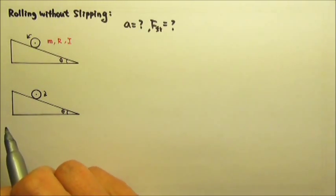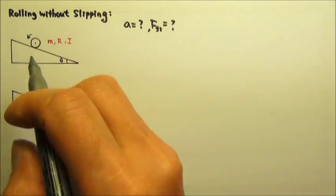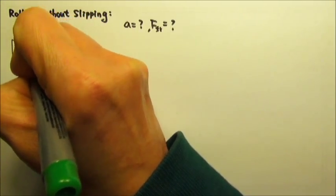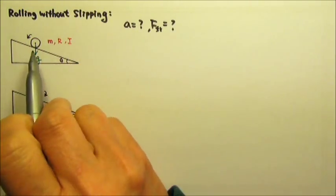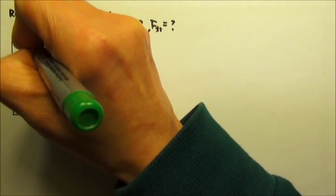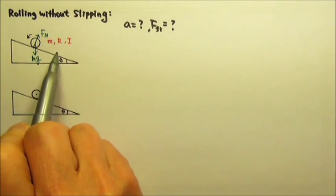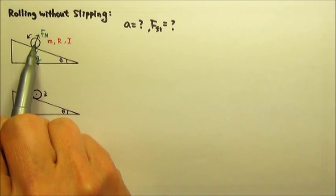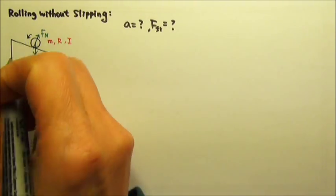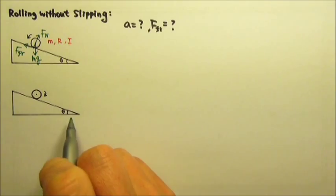In order for us to be able to see the torque acting on an object, we need to draw all the forces at the point of application. So mg would be at the center of mass. The normal force and friction are contact forces, so they come from the contact point. The normal force is perpendicular to the incline. And the friction — since there is no slipping — is static friction, which is against the tendency to slide. Because of mg sinθ acting on the object, the object has a tendency to slide down, so friction goes up the incline.